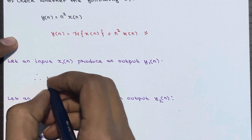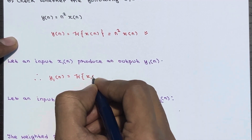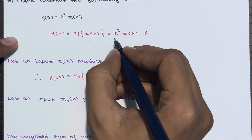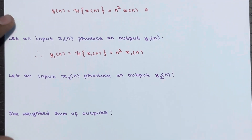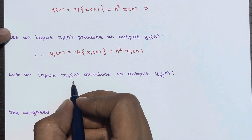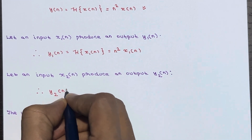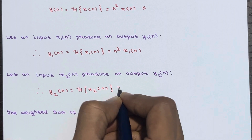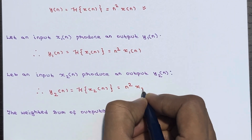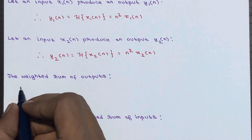From here we can say y1(n) = n² · x1(n). Now let an input x2(n) produce an output y2(n). From here, y2(n) = n² · x2(n).